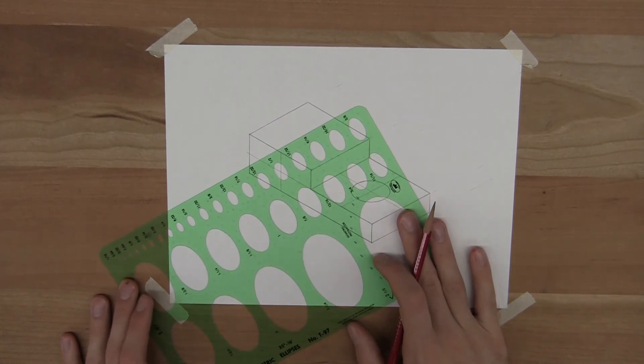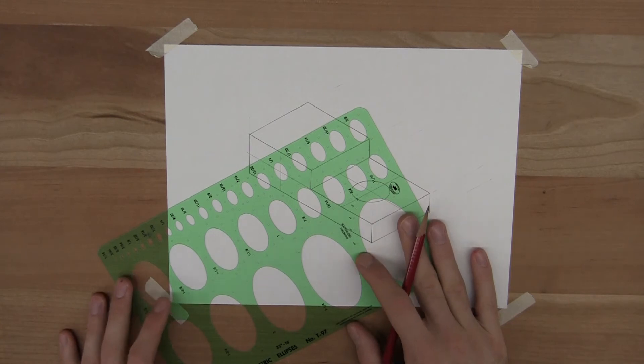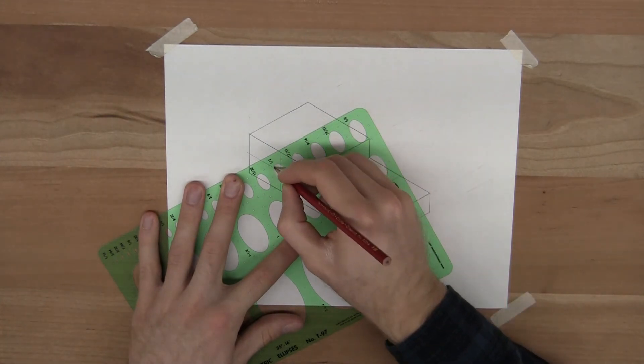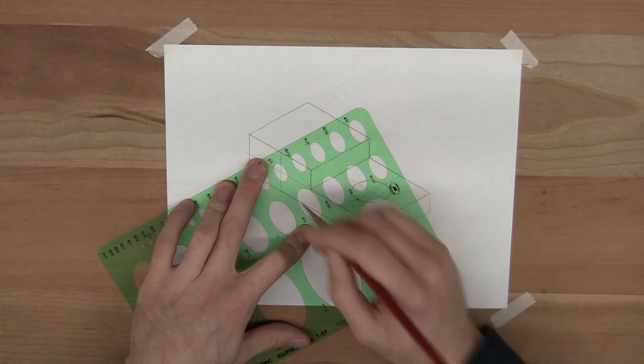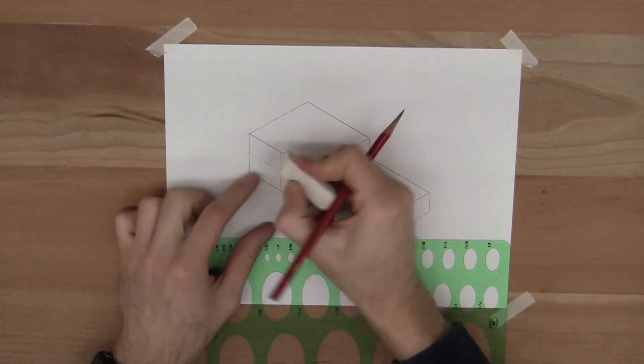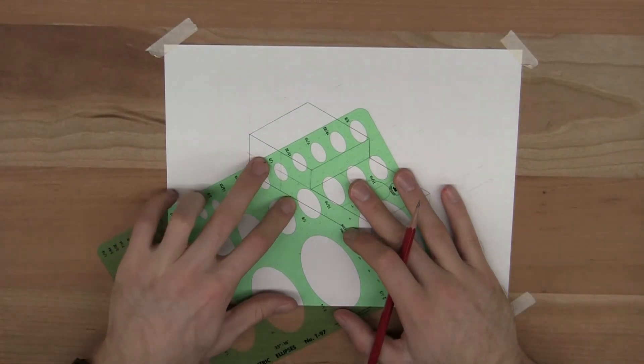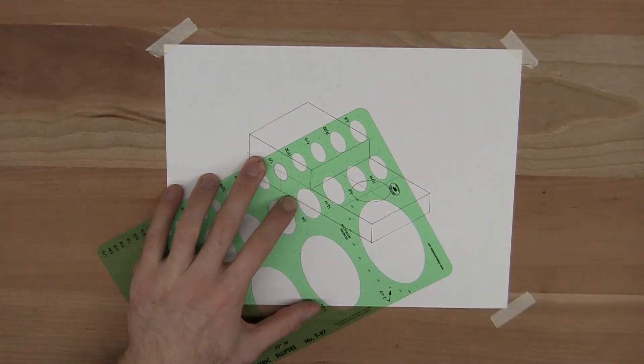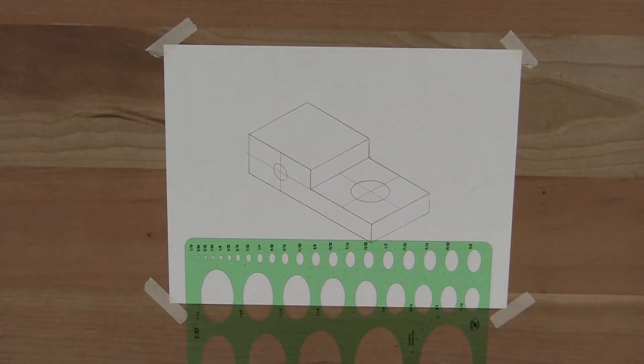So again, I'm just going to line it up with those lines. Those lines fall into the small holes on my template. Make sure you hold your template down like I just didn't do. I'm going to fix that. Line it up, hold it down. And there we go.